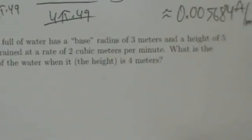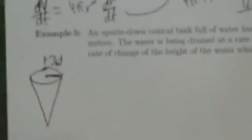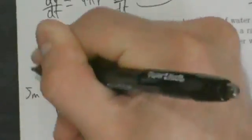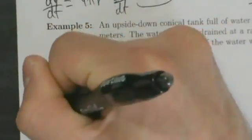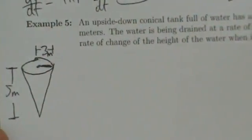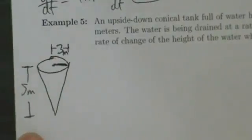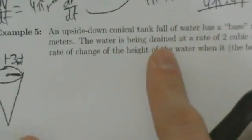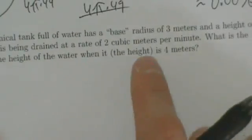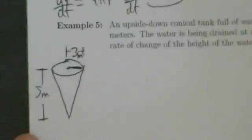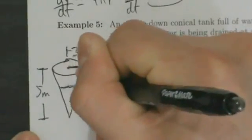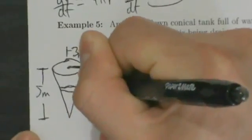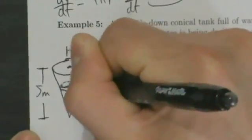The tank has a height of five meters, so this whole thing has a height of five meters. Now it's got some water in it, and the water is being drained at a rate of two cubic meters per minute. The tank is full, but we're being asked to find stuff when the height of the water is four meters, so the water level will be about here, making it conical also.